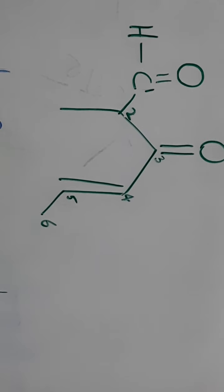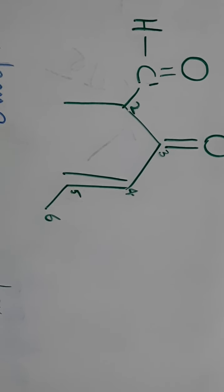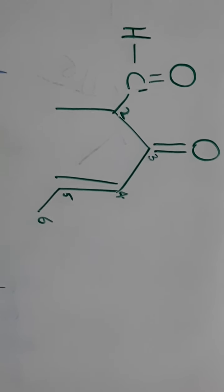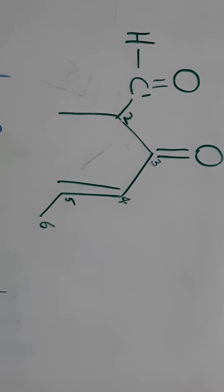So 1, 2, 3, 4, 5, 6. So we have 2 substituents here. Keto group and aldehyde group.